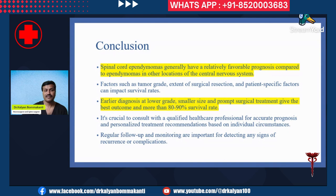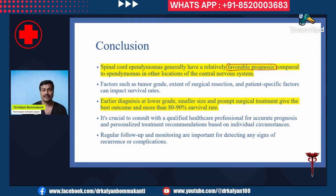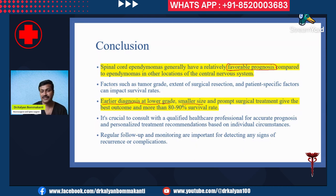In conclusion, spinal cord ependymomas generally have a relatively favorable outcome compared to other spinal cord tumors like astrocytomas. Factors such as tumor grade, extent of surgical resection, and patient-specific factors can impact survival rates. Earlier diagnosis at a lower grade, a smaller size, and prompt surgical treatment to achieve safe maximum excision give the best outcome and more than 80 to 90 percent survival rate.